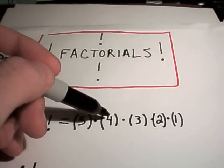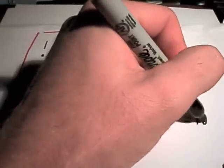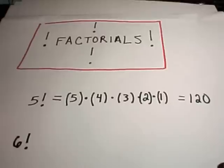So 5 factorial is simply a shorthand way for writing 5 times 4 times 3 times 2 times 1. And 5 times 4 is 20, 20 times 3 is 60, 60 times 2 is 120. So 5 factorial is equivalent to the number 120.